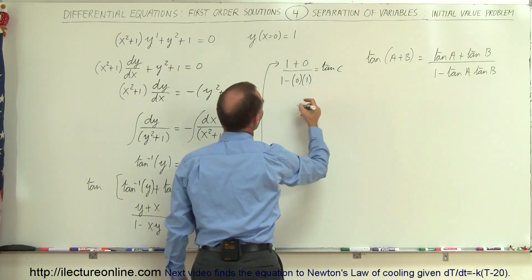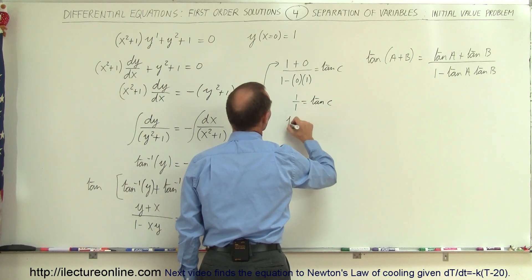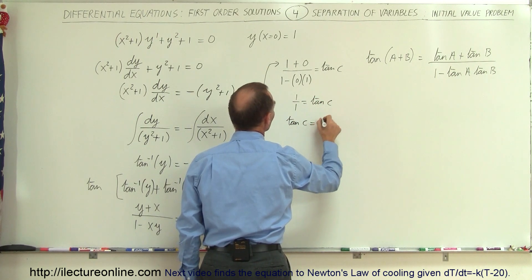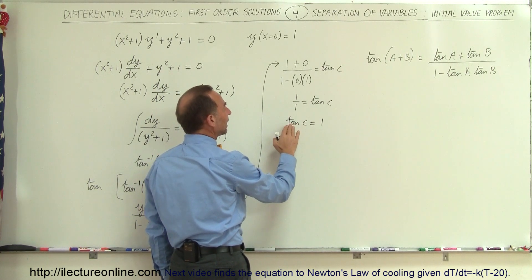So simplifying that, we get 1/1 = tan(c) or tan(c) = 1. Of course, what angle do I have so that when I take the tangent of that, I get 1?